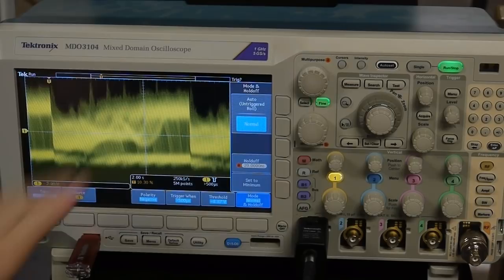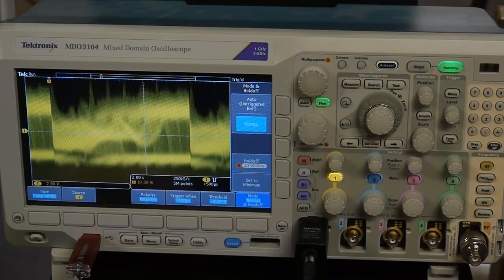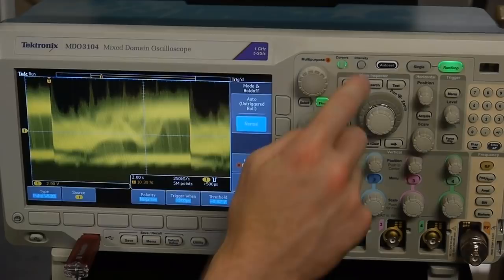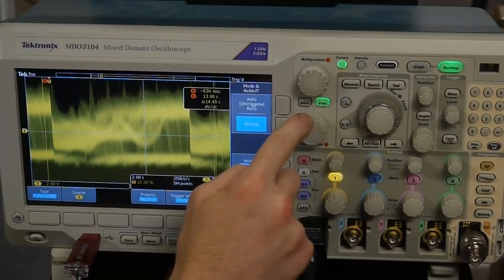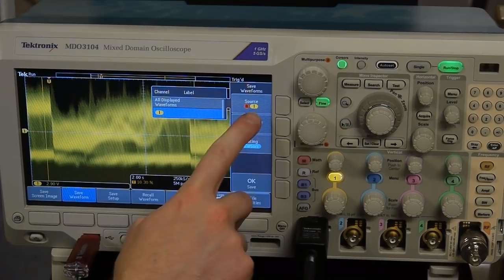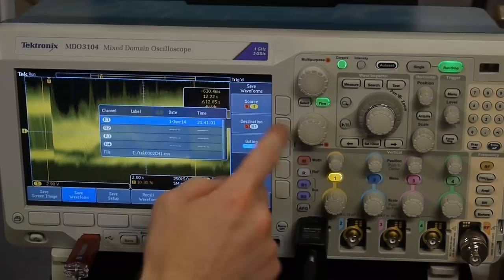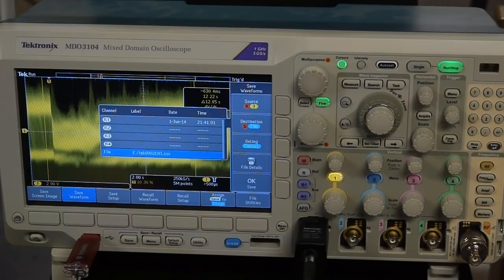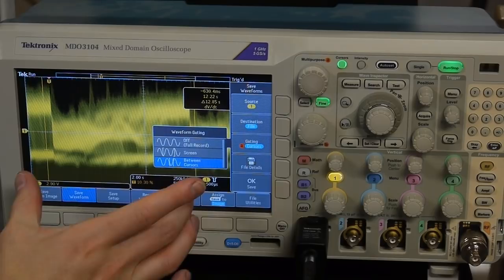So now we want to save this data to a file that we can get onto a PC. So I'm going to use my USB drive here. And the Tektronix has an interesting feature. What we can do is set up the cursors to just select the data that we want. So I'm going to basically give it some buffer, but basically just select that frame. And then we'll go to the Save menu and say Save Waveform. We're going to save Channel 1. And instead of saving it to a reference waveform, we're going to save it to a file. And for gating, we'll say Between Cursors. So we could have it save just the screen or the full record, but this will actually save us some data since we don't care about the other frames.